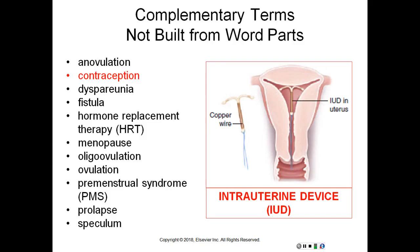Anovulation – absence of ovulation. Contraception – intentional prevention of conception, also called birth control. Dyspareunia – difficult or painful intercourse. Fistula – abnormal passageway between two organs or between an internal organ and the body surface.